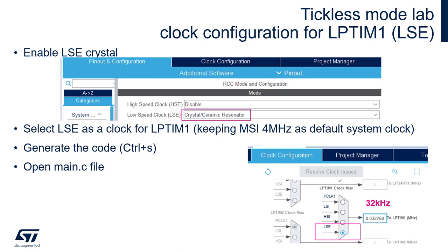After this, we can generate the code. Within STM32CubeIDE it is enough to save the changes by Ctrl+S. Within STM32CubeMX, please click the Generate Code button. Once the code is generated, please open the main.c file for further operations.